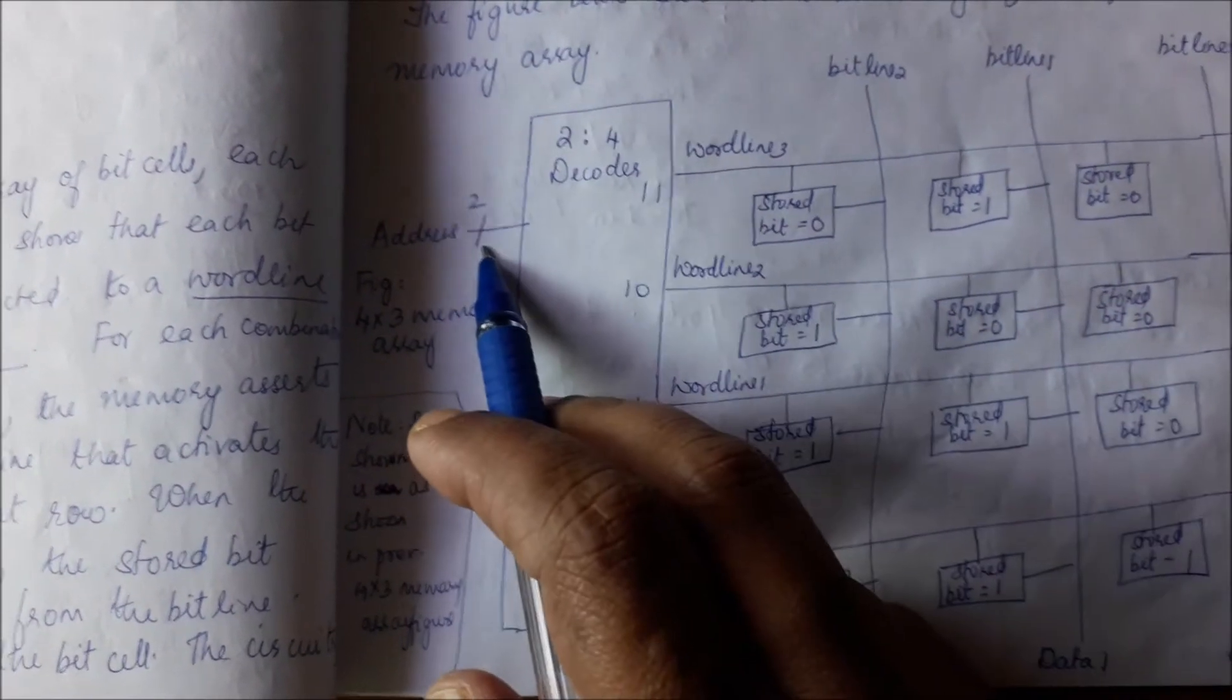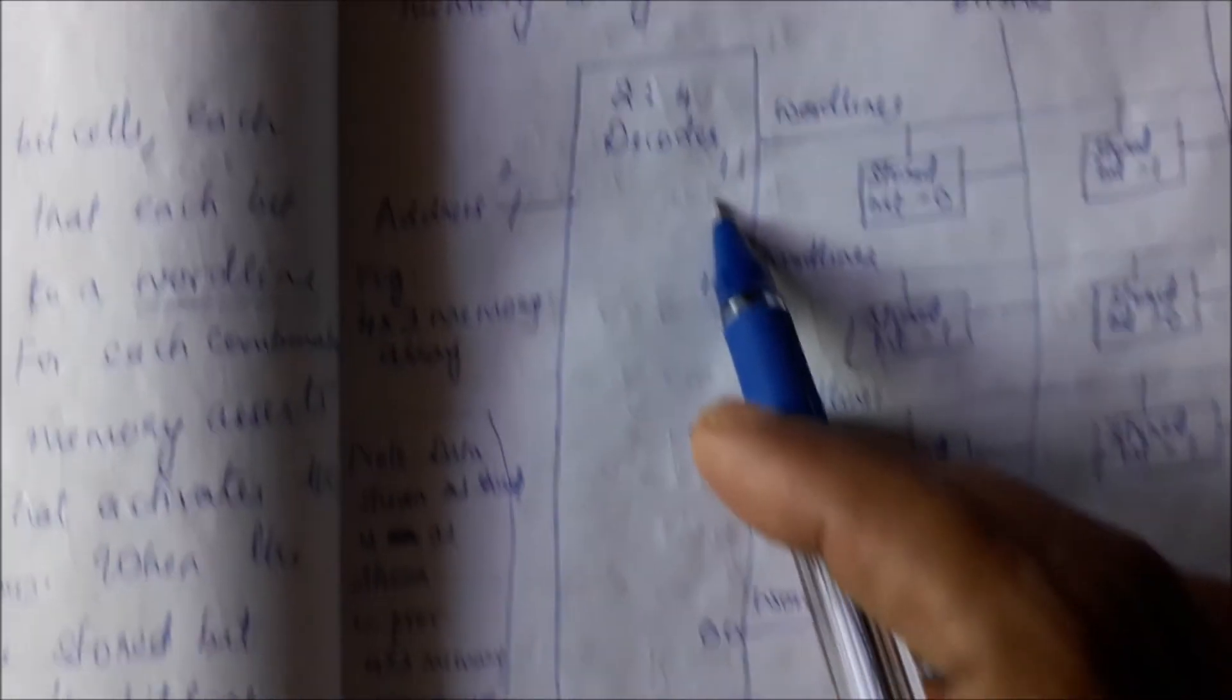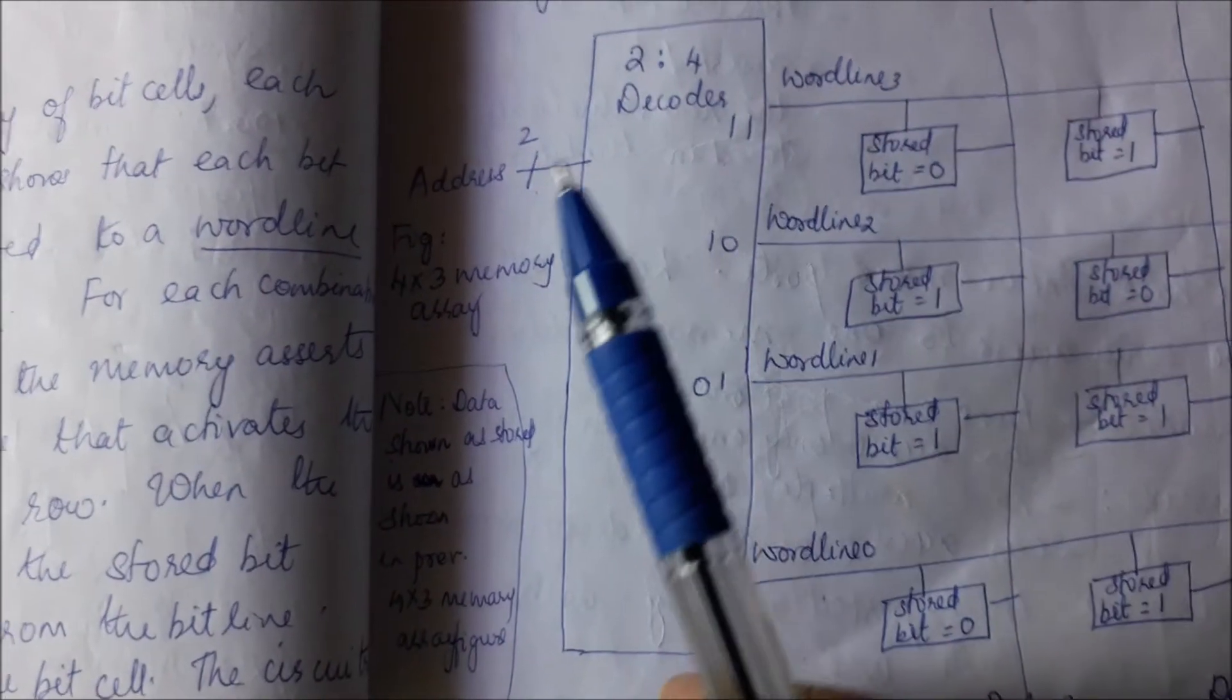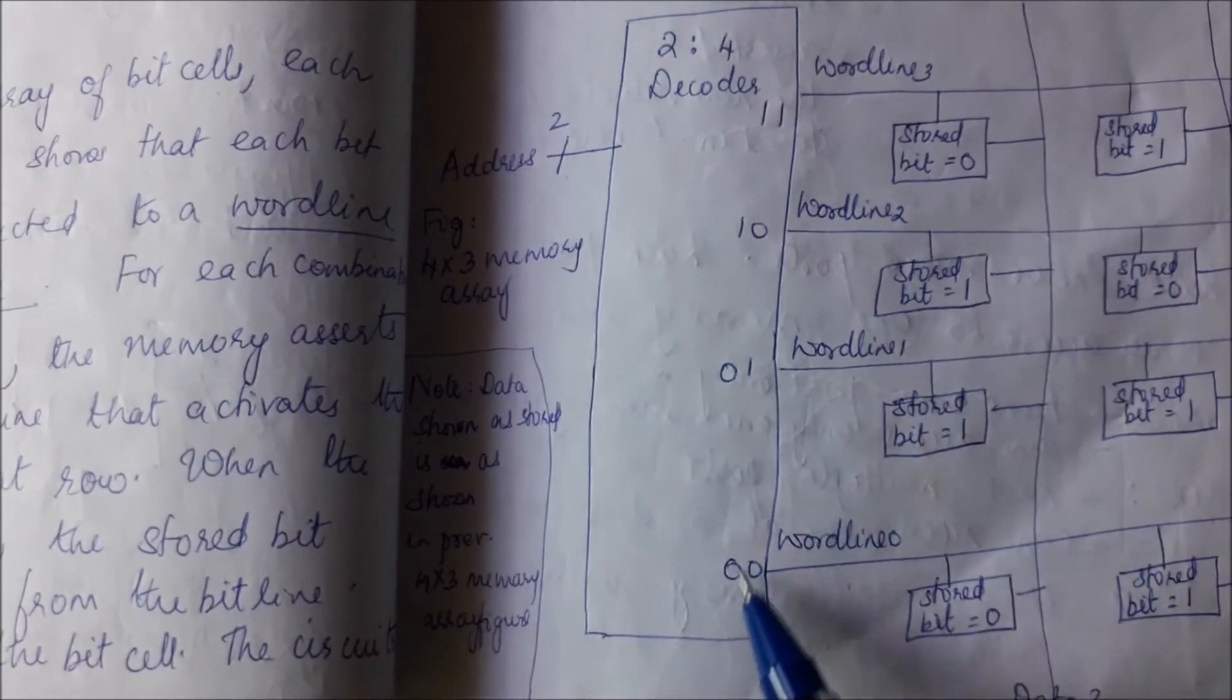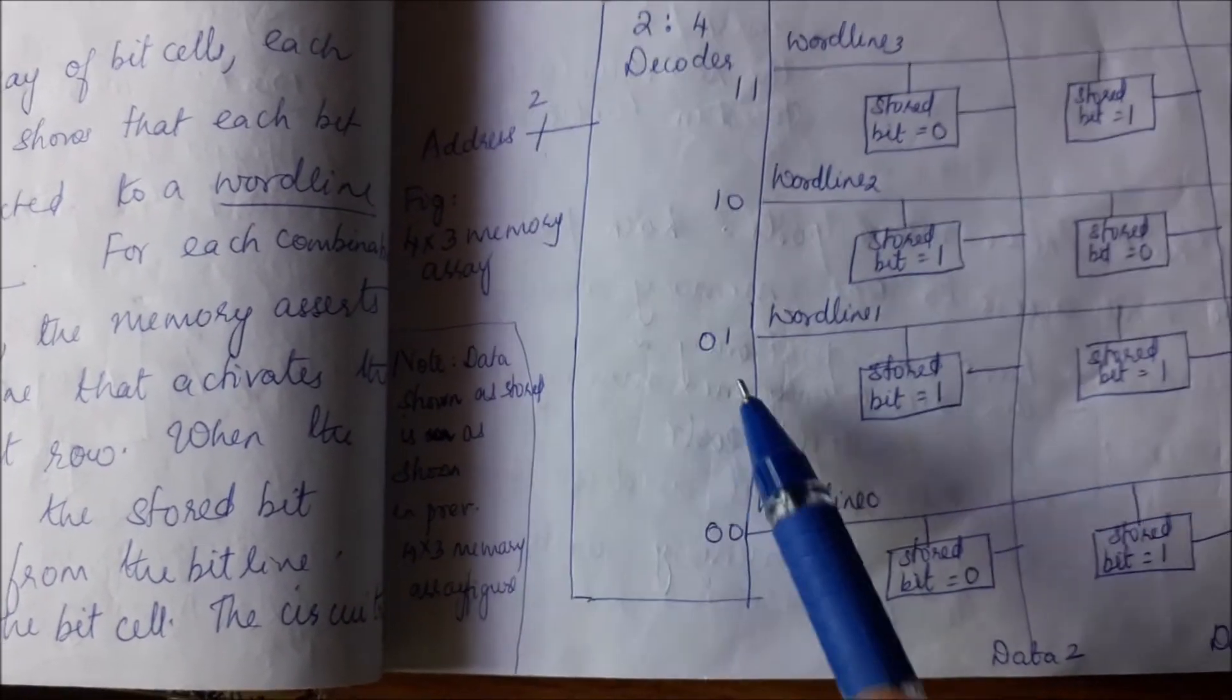So what you have is your 2 bit address bus. Just like you saw over here, 2 bit address bus. The same way you have your 2 bit address bus given to a 2 is to 4 decoder. So the output of the decoder—when I give 0, 0 the output will be 0, 0, or if I give 0, 1—this is the 2 is to 4 decoder.